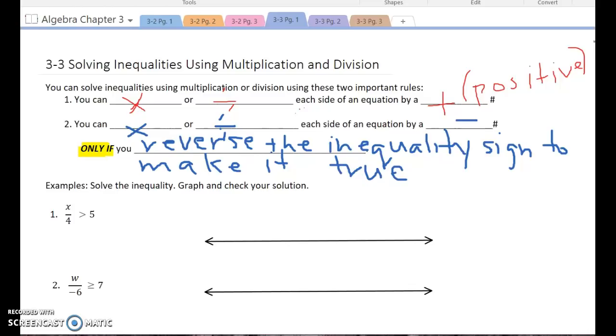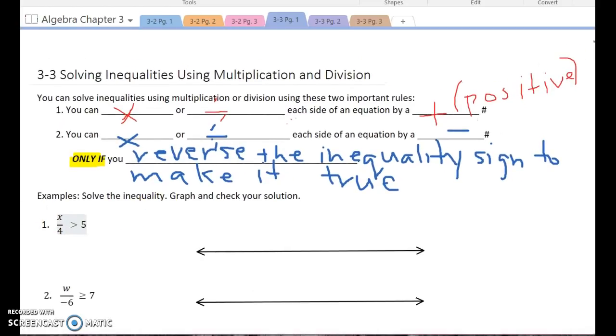So, for example, let's take a look here at number one. To solve number one, to get our x value alone, we have to multiply both sides by four. So we're going to multiply both sides by four. And in doing that, as soon as I multiply both sides by four, my x is all alone. And my five becomes five times four, which is 20.